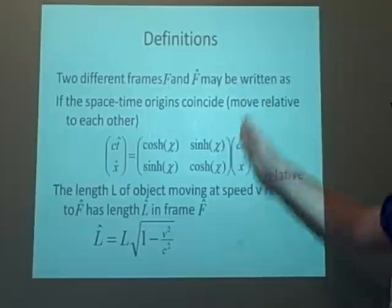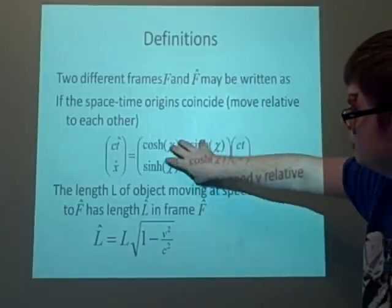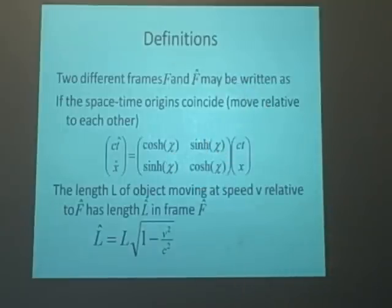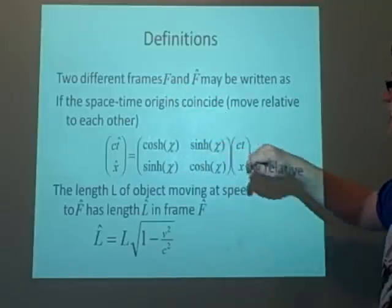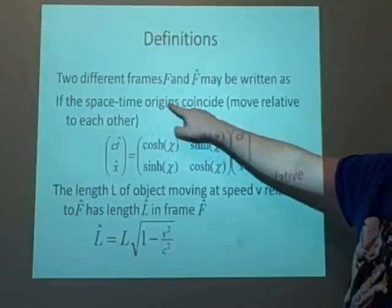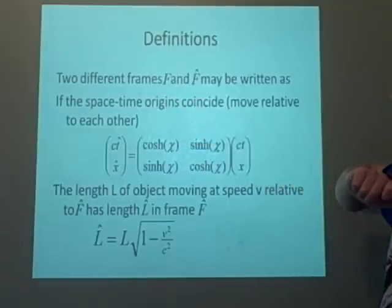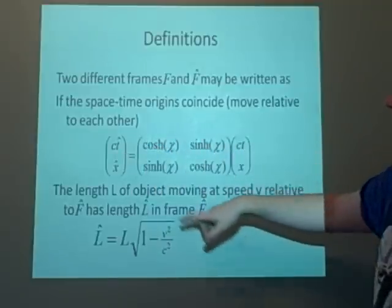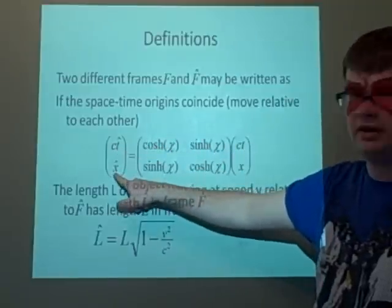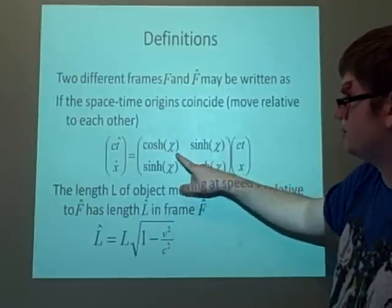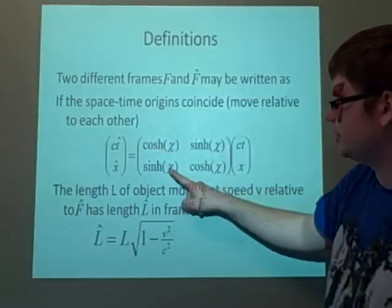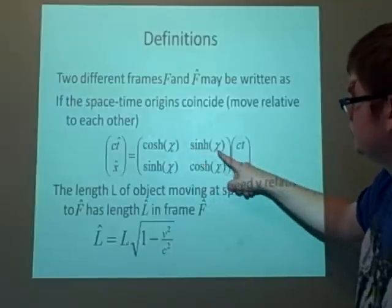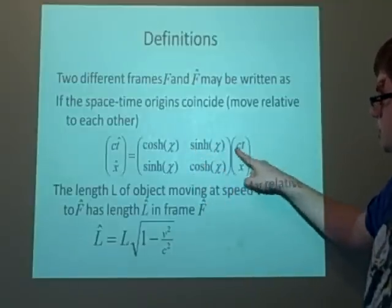And if you were to draw them as an axis, you'd see why this is relating the two frames. So if you have two frames, F and F-hat, and the origins coincide, then we can write it as the form here. So here we have C-T-hat, and X-hat is equal to cosh some angle, sinh some angle, sinh some angle, cosh some angle, C-T-X.